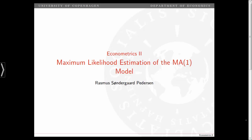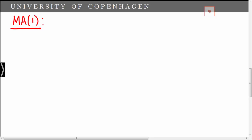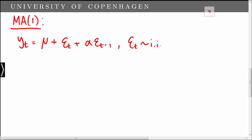In this video we consider maximum likelihood estimation of the moving average model of order 1. The moving average model of order 1 states that yt is equal to an intercept mu plus epsilon t plus alpha times epsilon t minus 1. Here epsilon t is an independent process that is identically distributed over time with a normal distribution with mean 0 and variance sigma squared. This holds for t equal to 1 up to time T.